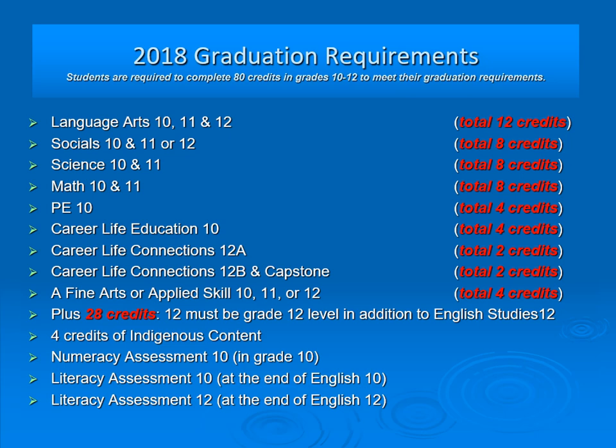Career Life Education is a required course, as is Career Life Connections 12A, Career Life Connections 12B, and Capstone. You must complete a Fine Arts or Applied Skills course at the Grade 10, 11, or 12 level, plus an additional seven courses — 28 credits — must be completed. Of those, 12 credits or three courses must be at the Grade 12 level. At least four credits must be with Indigenous content. You will also be required to complete the Numeracy Assessment and the Literacy Assessment in Grade 10, and the Literacy Assessment in Grade 12.